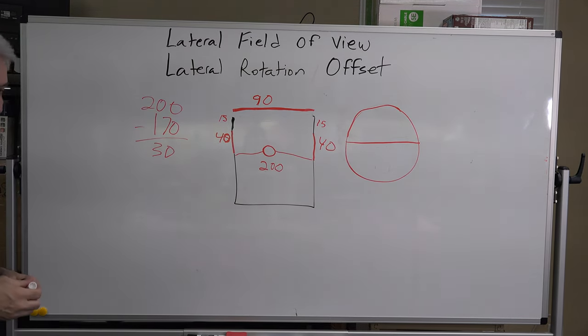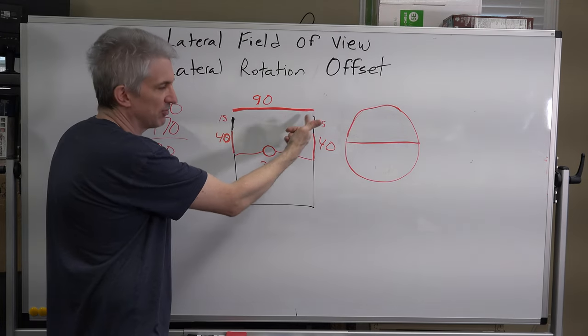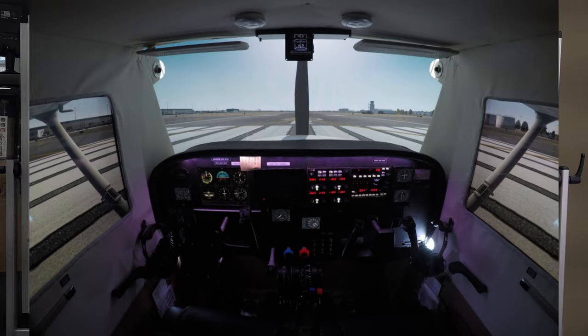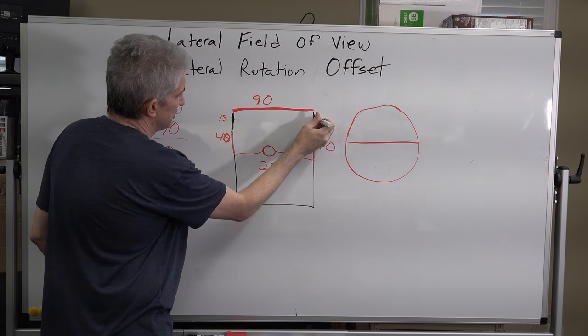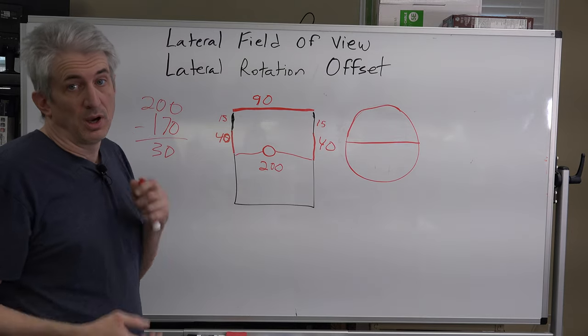15 is going to be our dead zone, our dead spot, where we don't see anything because it's covered by the walls of the cockpit. Okay, so we've got 15 degrees that we're saying right here is not going to be visible at all.